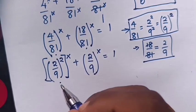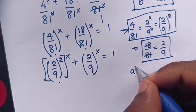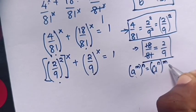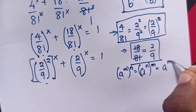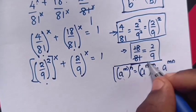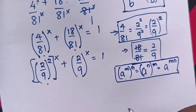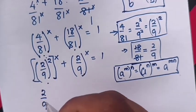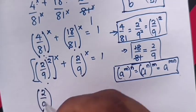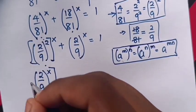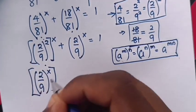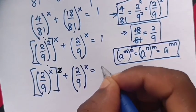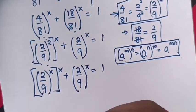Next step: we apply the exponential rule that a power m bracket power n is equal to a power (m times n). Therefore, in our equation, in this part we will exchange powers. So it will be (2 over 9) power x bracket power 2 plus (2 over 9) power x is equal to 1.